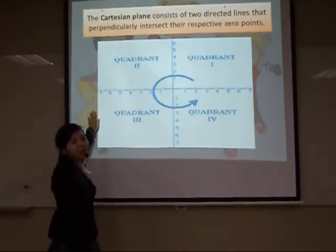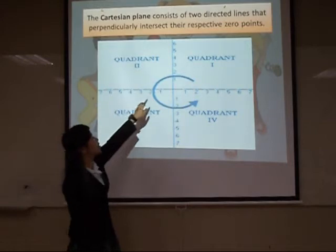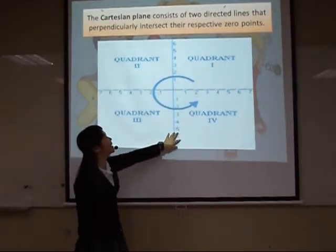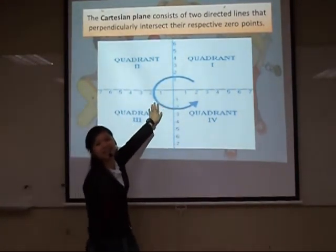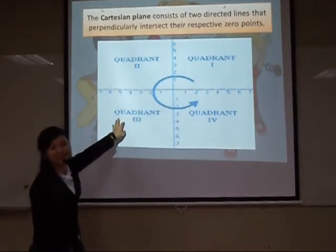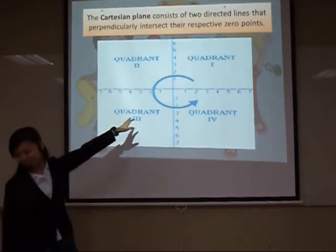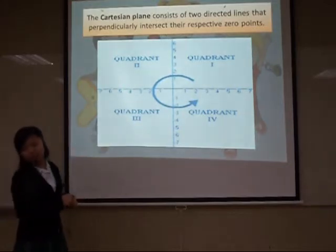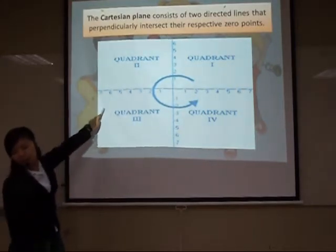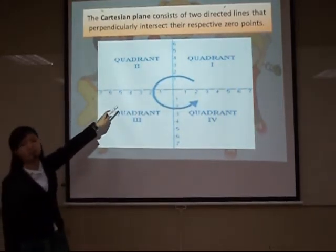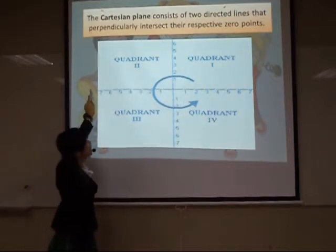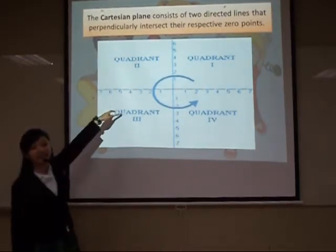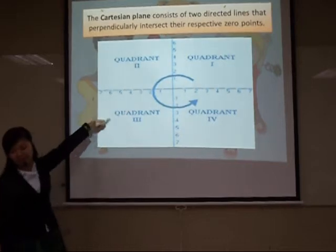The Cartesian plane is divided into quadrants: first, second, third, and fourth. The middle part is the point of origin, which is zero, zero. The horizontal line is called the X-axis, and the vertical line is called the Y-axis.